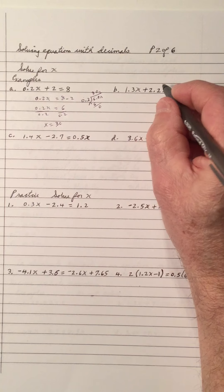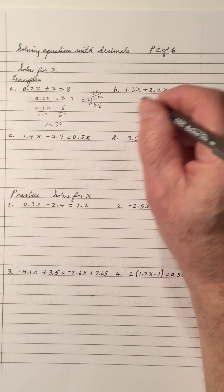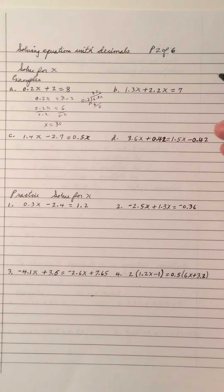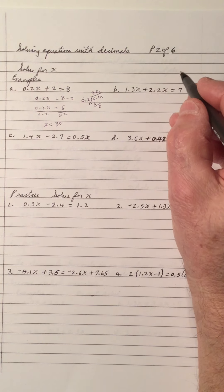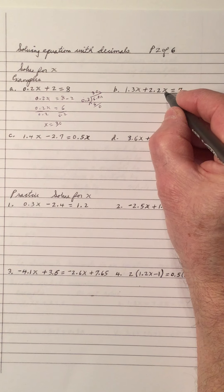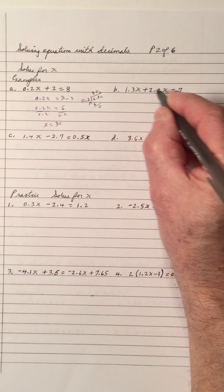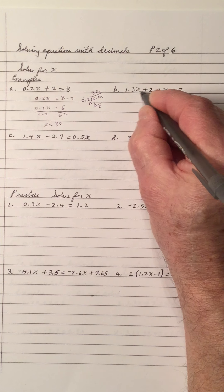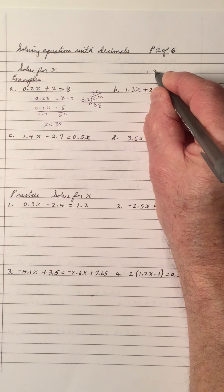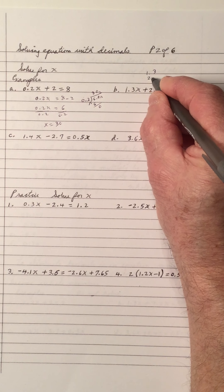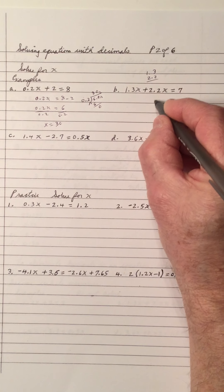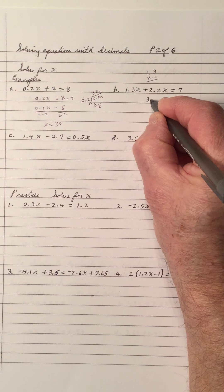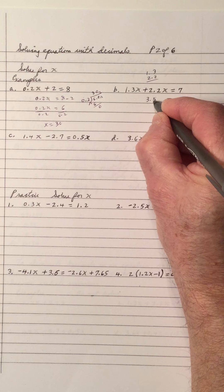The only difference is that you're dividing with decimals instead of dividing with a whole number. We can handle that. Like terms, we add them up — we get 1.3, add on 2.2, so that gives us 3.5.